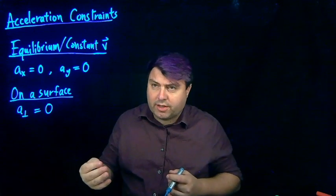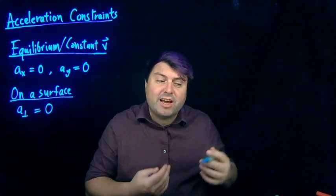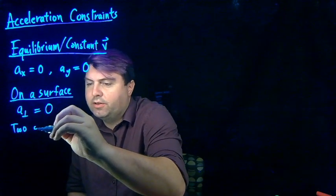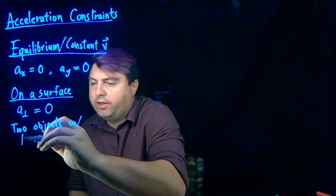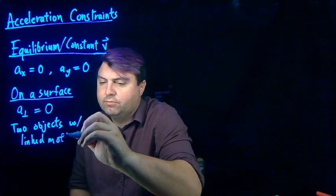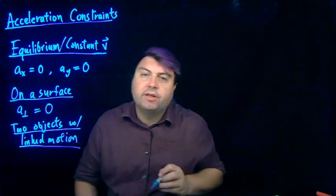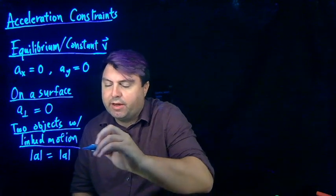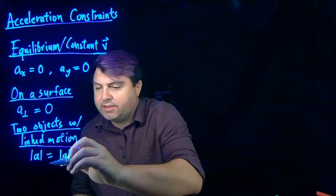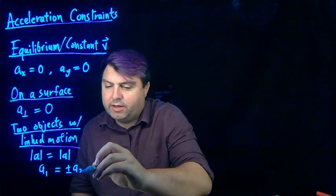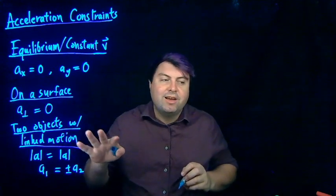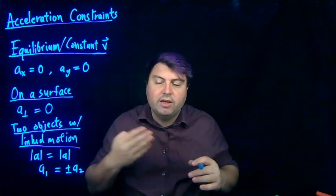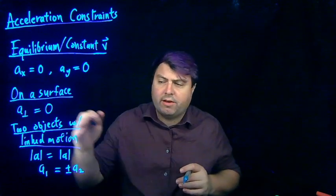If we're just told the acceleration, then we can also just have an equation for the acceleration — that can be another acceleration constraint. Lastly, if we have two objects with linked motion, which we'll see when talking about Newton's third law interactions, very often we'll have that the magnitude of acceleration equals the magnitude of acceleration of the other object. We might say a1 equals plus or minus a2. We need a little art and skill to figure out how the two objects link in motion, and we'll talk more about that when we get to Newton's third law.